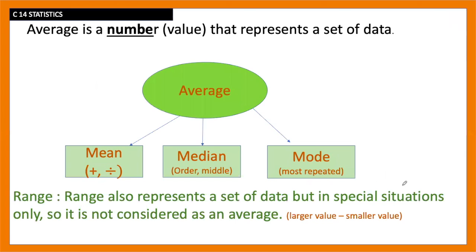Let's see in details. So average are of three types: mean, median and mode. Mean, we get by adding all the values and dividing by how many values you have. Median, we get by arranging - this is important - order them and then choose the middle value. Mode is the most repeated. To find range, we apply the rule larger value minus smaller value.